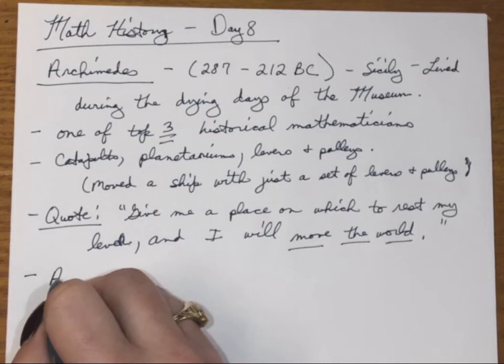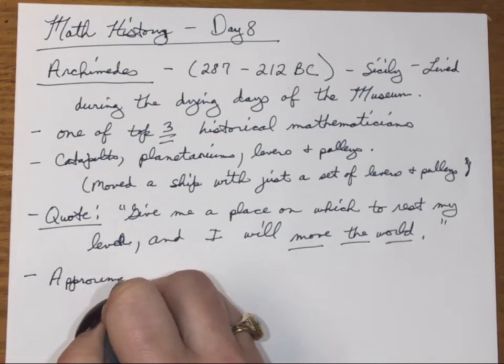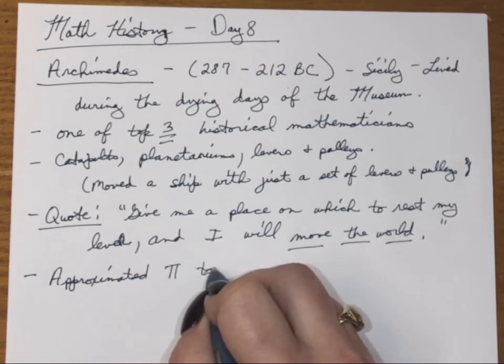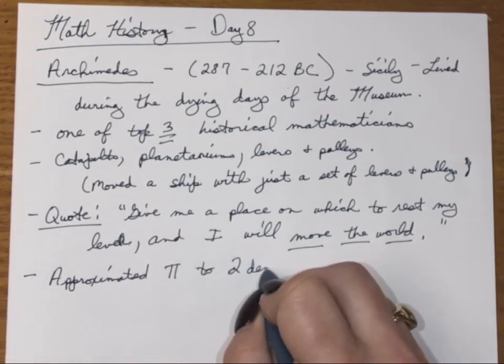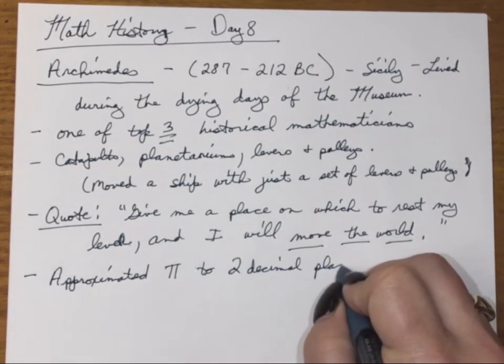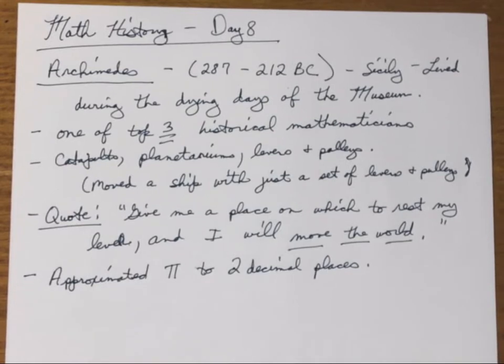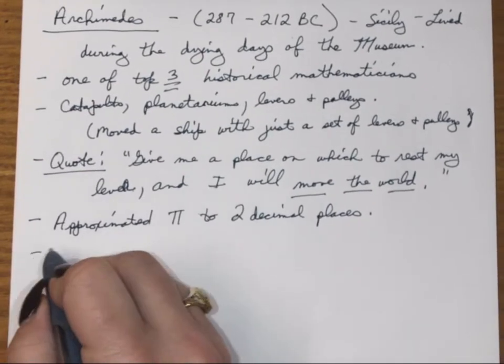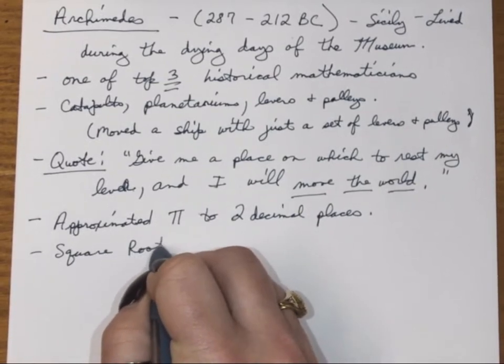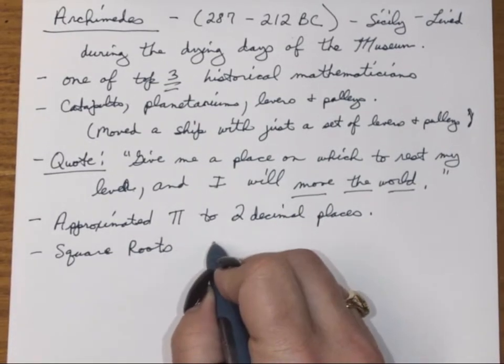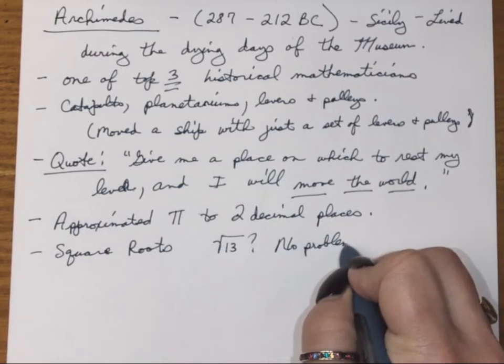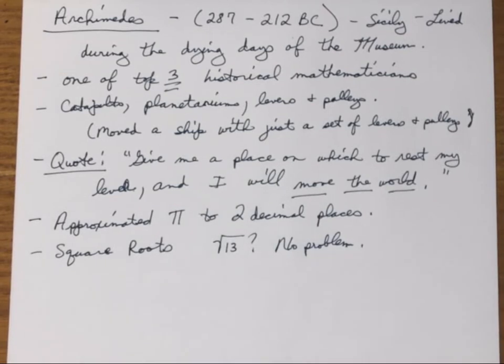He approximated pi to two decimal places. And that's pretty impressive for 300 years BC. He worked a lot with square roots, and he just didn't care. While the Pythagoreans were stressing out over square root of 13, no problem for Archimedes. He'll just work with it.